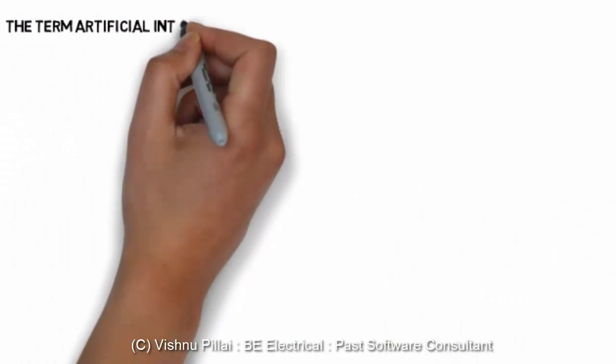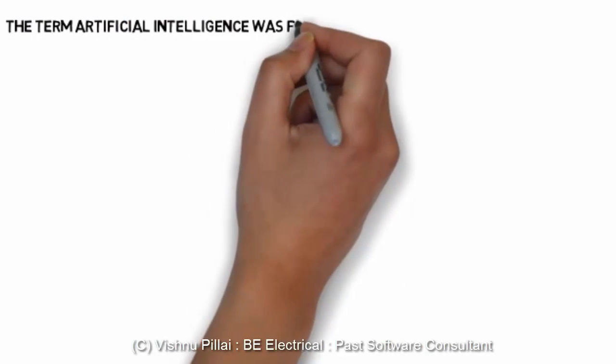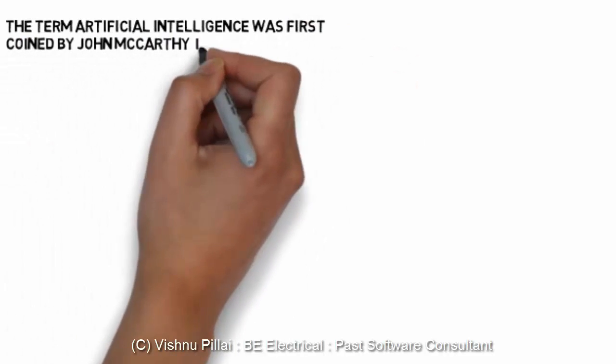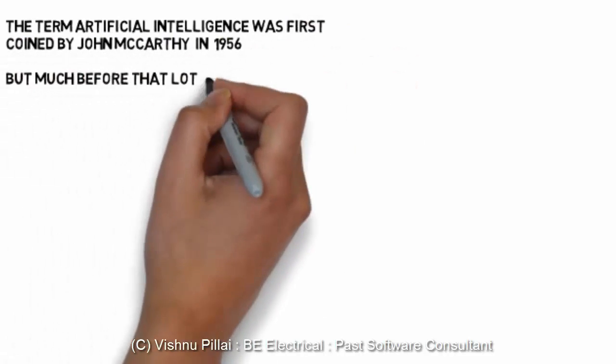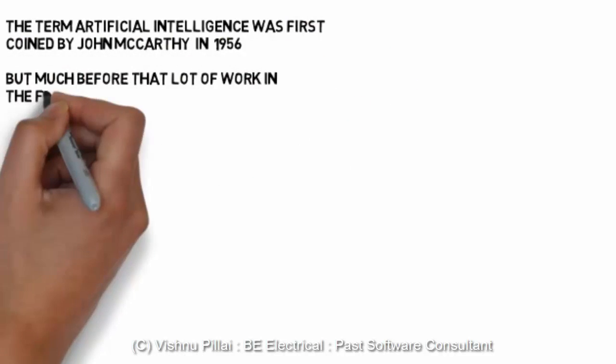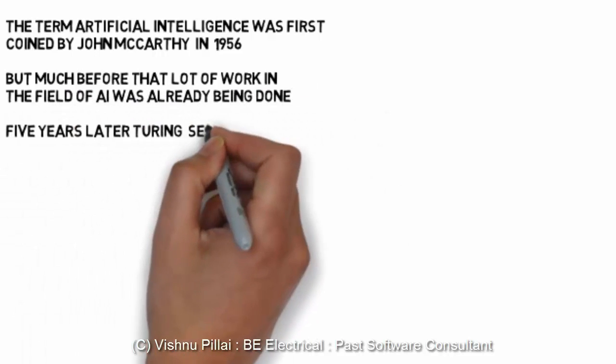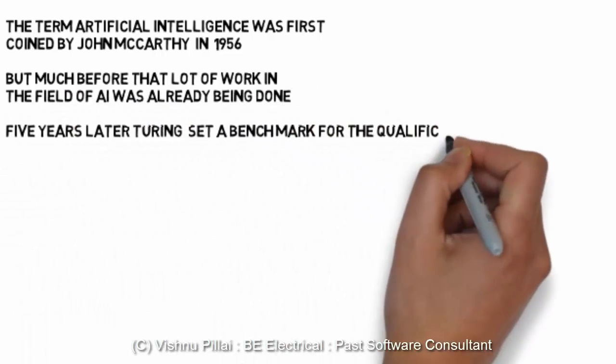The term Artificial Intelligence was first coined by John McCarthy in 1956, but much before that, a lot of work was already being done in the field of Artificial Intelligence.